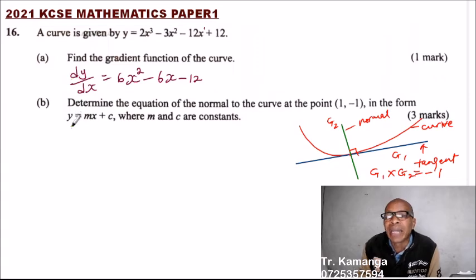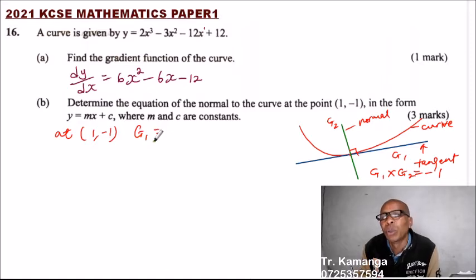Now, since in part one we have gotten the gradient function, we can now come here and say, at the point (1, -1), the gradient of the tangent, which we can call G1, is equals to: we substitute the value of x in this one, in our gradient function.